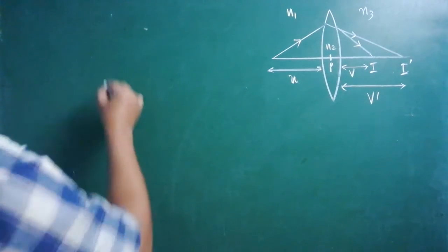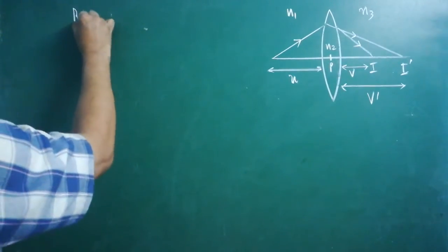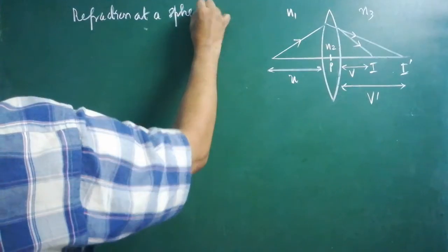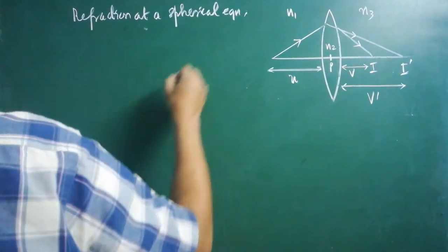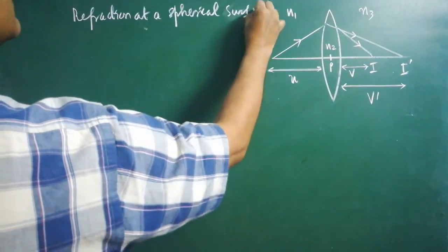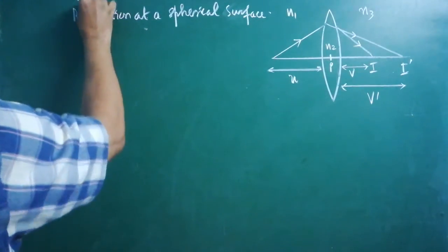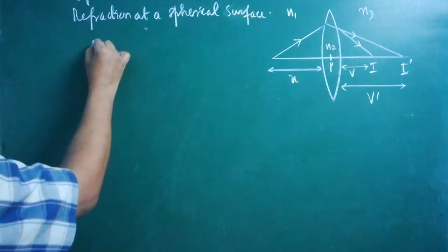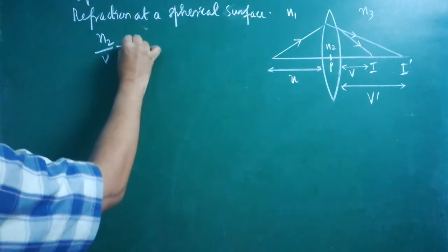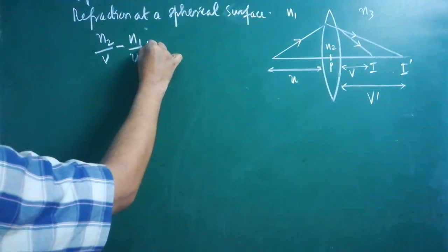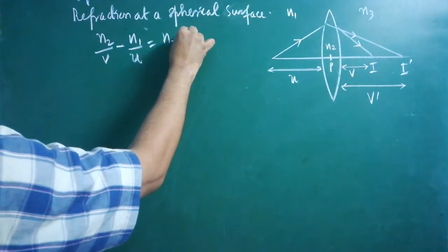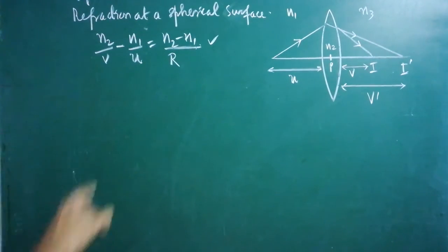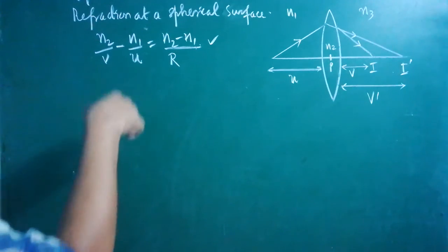We will write the general equation for refraction at a spherical surface: N2 divided by V minus N1 divided by U equals N2 minus N1 divided by R. This is the general equation. By using this, we have to write two equations — one for each surface — and then add them.